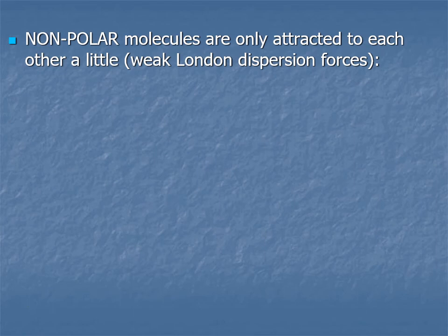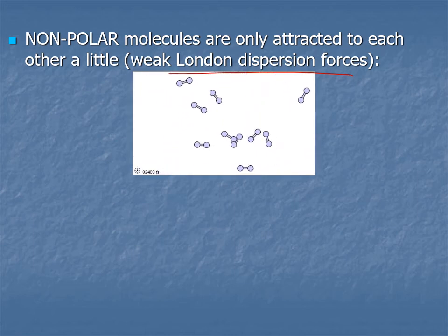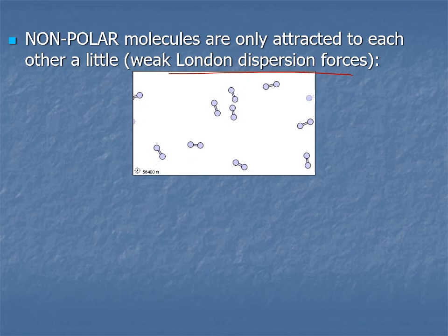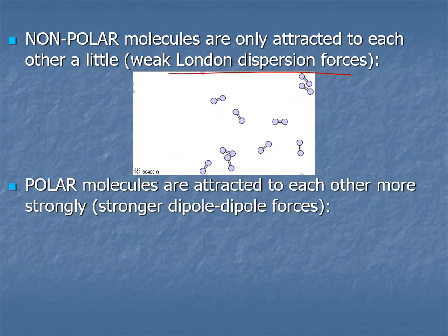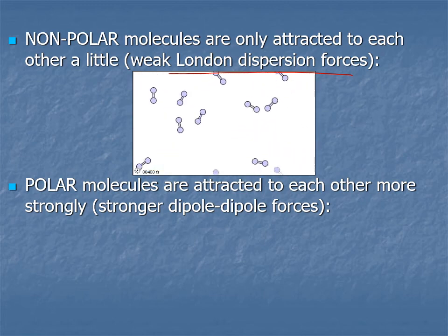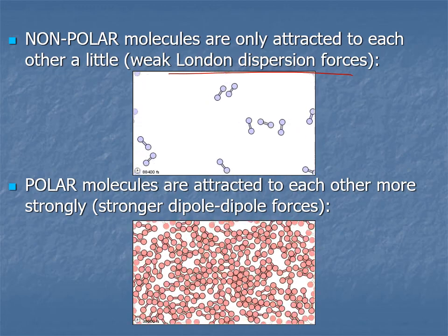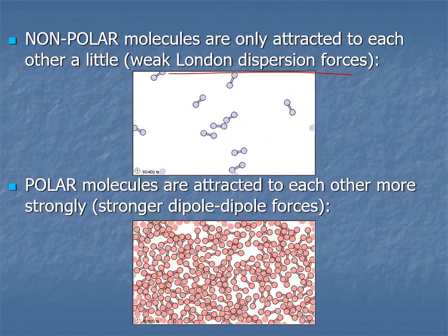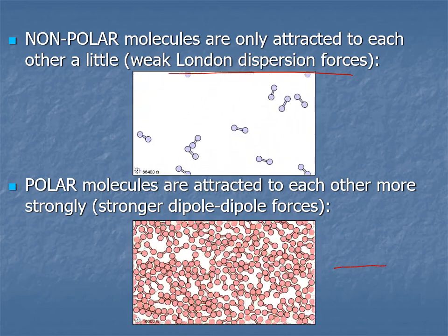Non-polar molecules are held together only by London dispersion forces. They are attracted to each other through their protons and electrons, but the attraction is relatively weak — it doesn't take much energy to get them moving to the point where they fly apart and turn into a gas. Polar molecules have dipoles that give them a partial positive and partial negative end, so they are more strongly attracted to each other.